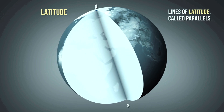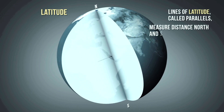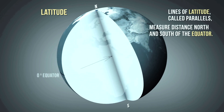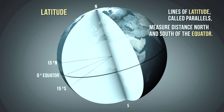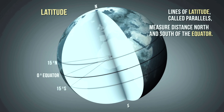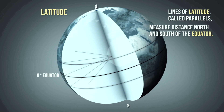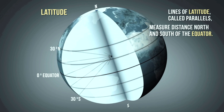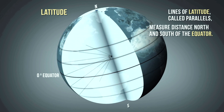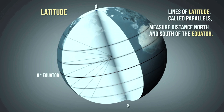Lines of latitude, called parallels, measure the distance north and south of the equator. The longest latitude is called the equator, which divides the earth into two equal halves.